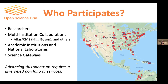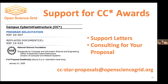Resource providers tend to be academic institutions and national laboratories, some of whom serve researchers broadly across their campus or provide specific support for multi-institutional collaborations. Science gateways can use OSG as a compute backend as well. We have support specifically for CC star compute awards — for those awards, there's a requirement to share 20% of funded resources. We've done quite a bit to make sure we can provide support letters and ensure that the pathway to sharing resources from newly funded CC star awards is as easy as possible.